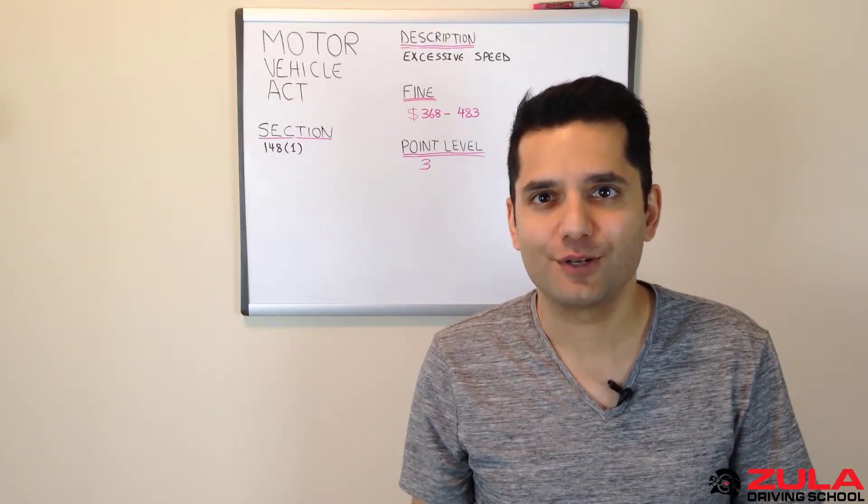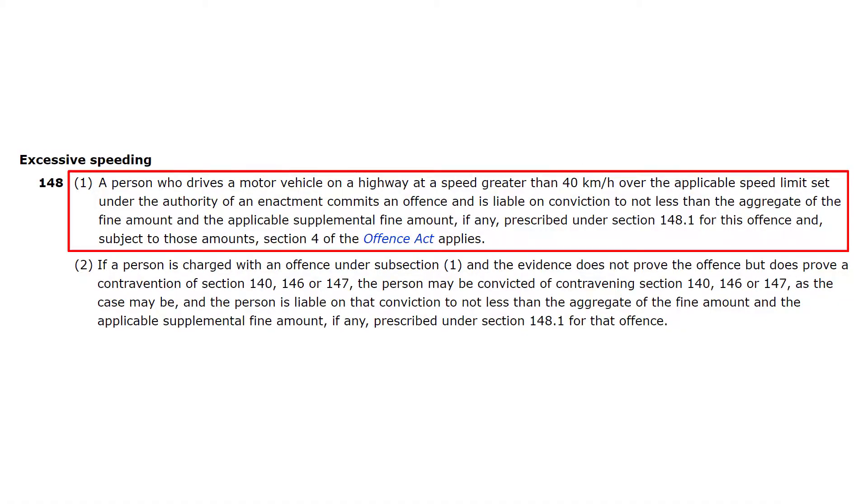So let's take a look at what the Motor Vehicle Act states. It reads, a person who drives a motor vehicle on a highway at a speed greater than 40 kilometers an hour over the applicable speed limit set under the authority of an enactment commits an offence and is liable on conviction to not less than the aggregate of the fine amount and the applicable supplemental fine amount, if any, prescribed under section 148.1 for this offence and subject to those amounts section 4 of the Offence Act applies.